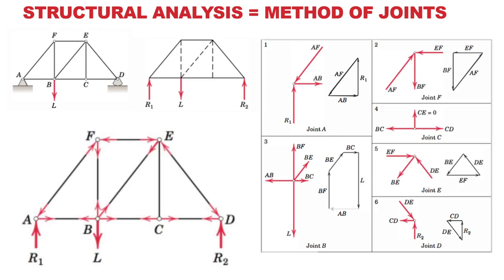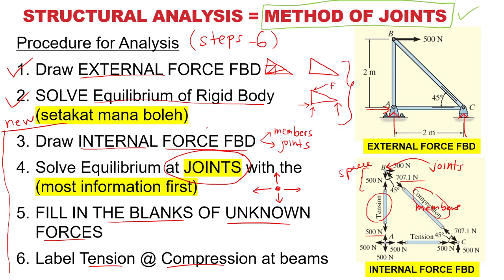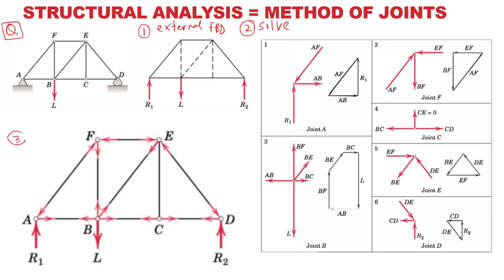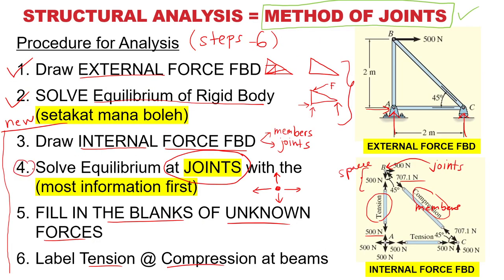So looking at a typical structure — this is the problem, this is the question. Step number one: draw an external free body diagram, then solve it. Once you've solved it, draw the internal free body diagram. Then choose which joint is easiest to solve — that is step four: solve the equilibrium of the joints.